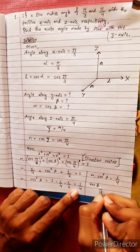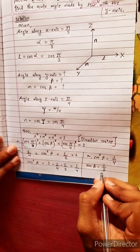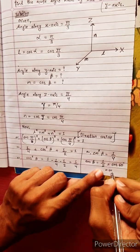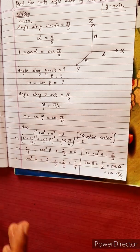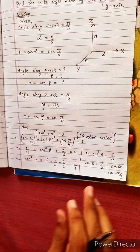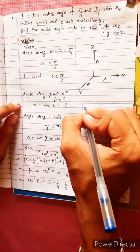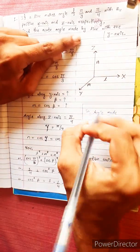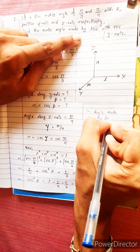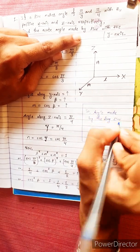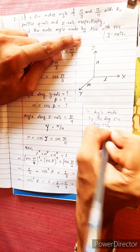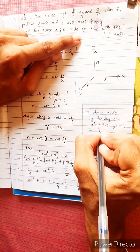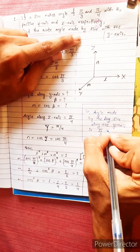So cos beta equals 1/2, which means beta equals cos inverse(1/2), which is 60 degrees or pi by 3. Therefore, the angle that the line makes along the positive y-axis is pi by 3, or 60 degrees.